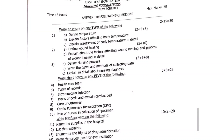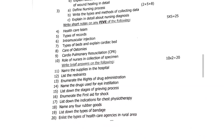Third question: 3A — define nursing process. 3B — write the types and methods of collecting data. 3C — explain in detail about nursing diagnosis. 2 plus 5 plus 8 marks. Next, write short notes — five mark questions. Fourth question: healthcare team. Fifth question: types of records. Sixth question: intramuscular injection. Seventh question: types of beds including cardiac bed. Eighth question: care of ostomies. Ninth question: cardiopulmonary resuscitation. Tenth question: role of nurse in collection of specimen.